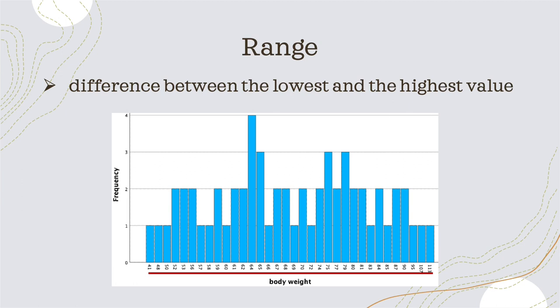Next I want to introduce the range. The range is a very easy measure of dispersion. Measures of dispersion give us an impression of how far the data is spread across our scale. Basically, the range shows the difference between the lowest and the highest value in our sample — here, the difference between 41 and 130 — that is how far our data is spread with regards to body weight.